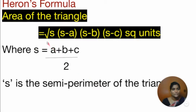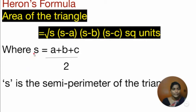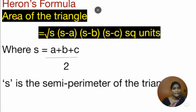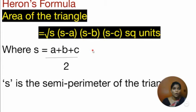First, let us take Heron's formula. Area of the triangle is equal to root of S into (S minus A) into (S minus B) into (S minus C) square units, where S is equal to A plus B plus C divided by 2. S is the semi-perimeter of the triangle.